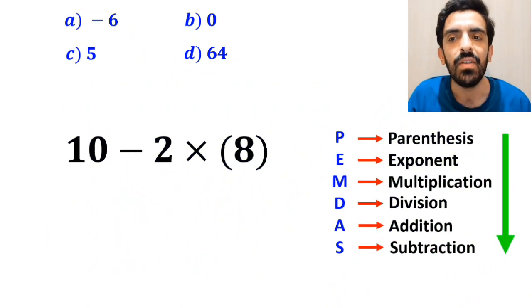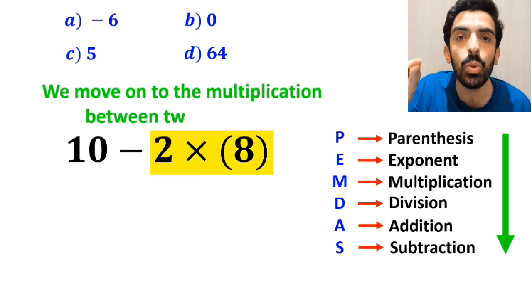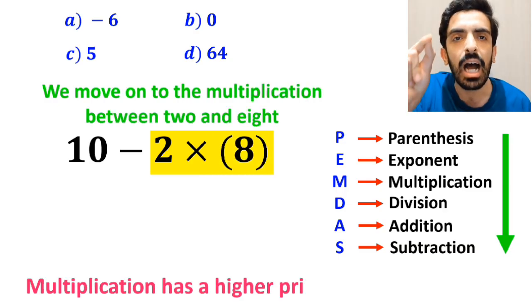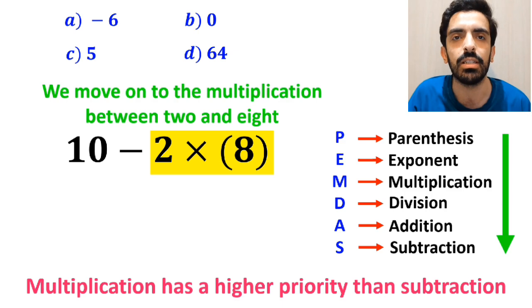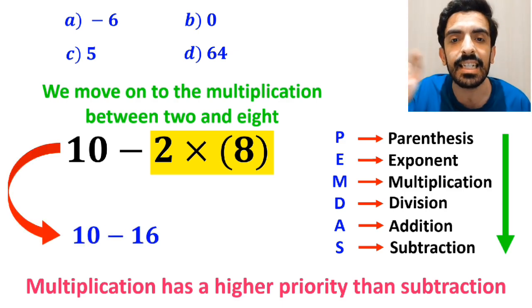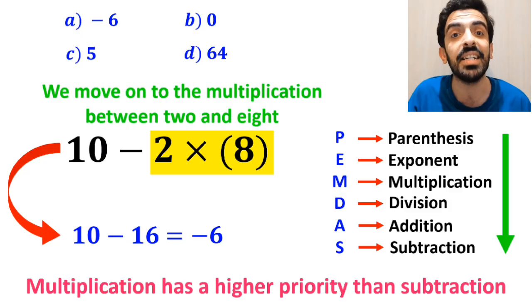In the next step, we move on to the multiplication between 2 and 8, because multiplication has a higher priority than subtraction. So, we derive this expression as 10 minus 16, which finally gives us the answer negative 6.